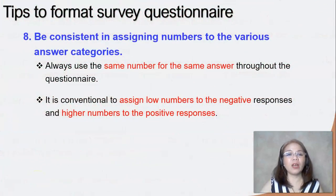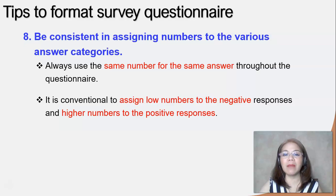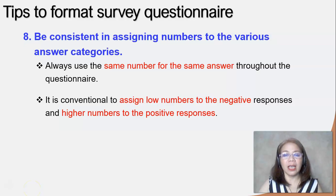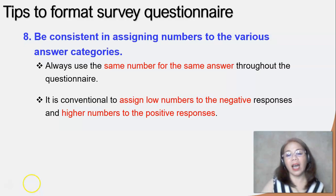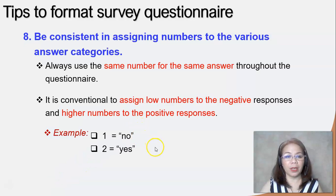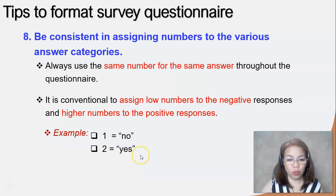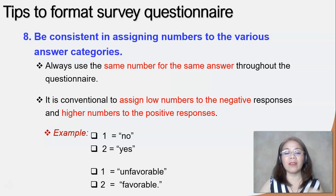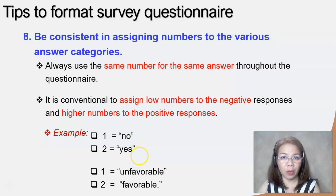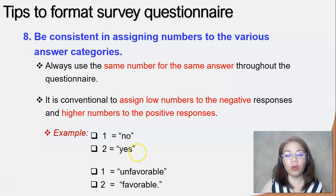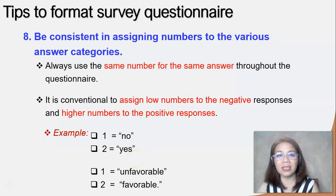Next, be consistent in assigning numbers to the various answer categories. Always use the same number for the same answer throughout the questionnaire. According to scholars, it is advisable to assign low numbers to negative responses and higher numbers to positive responses. For example, if you have yes or no choices, assign one to no and two to yes. Or for choices like unfavorable and favorable, assign one to the negative response (unfavorable) and two to the positive response (favorable).